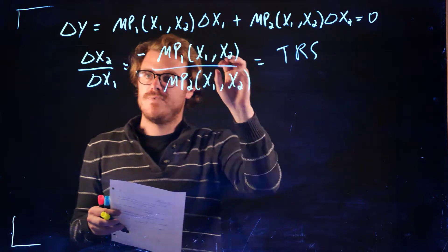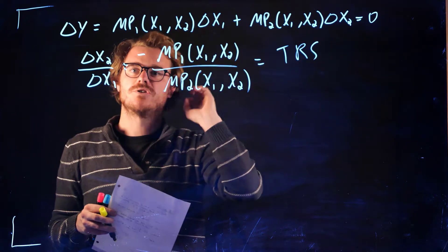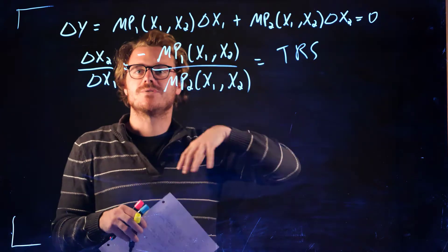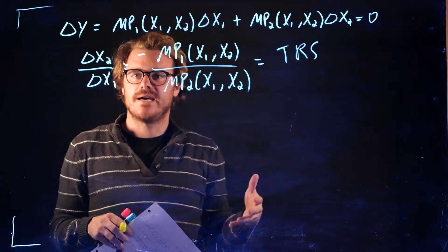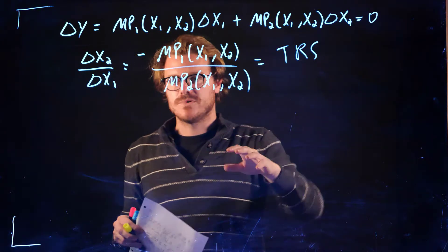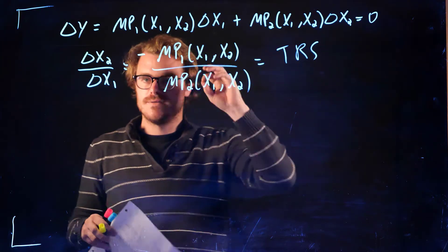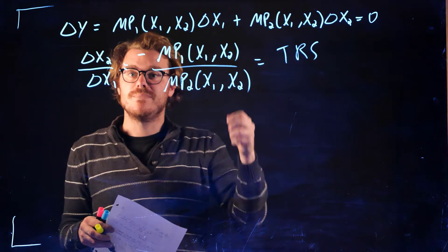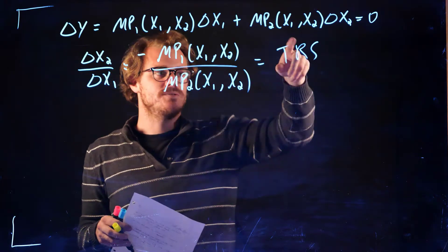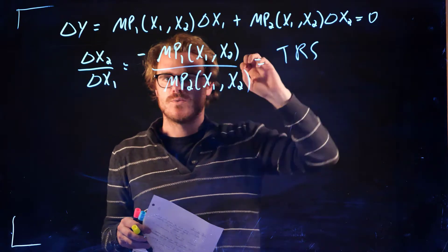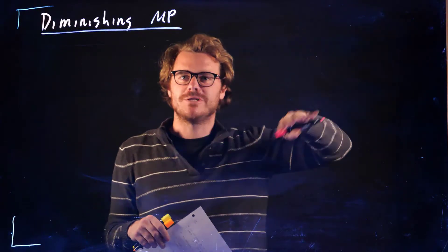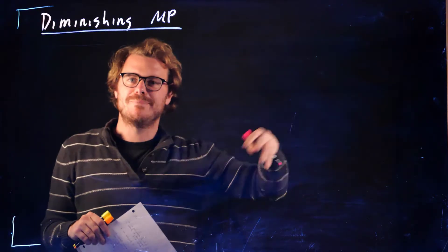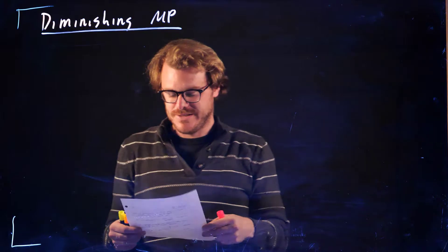Notice this looks exactly like our marginal rate of substitution — the technical rate of substitution is just the ratio of marginal products as opposed to the ratio of marginal utilities. It's a very similar idea, just applying to a slightly different setting. So let's now move on to diminishing marginal products or diminishing marginal technical rate of substitution, which is really similar to the assumption we made about diminishing marginal utility.